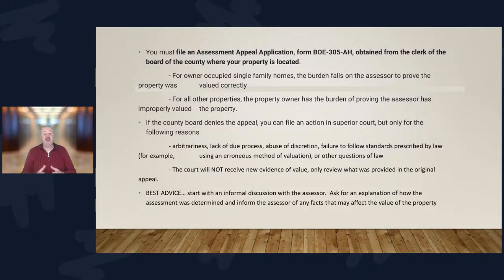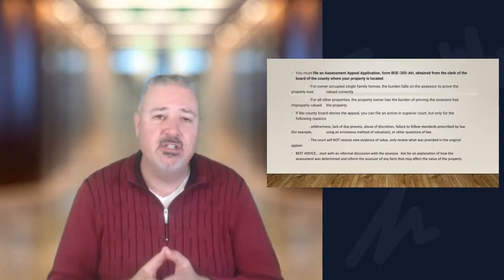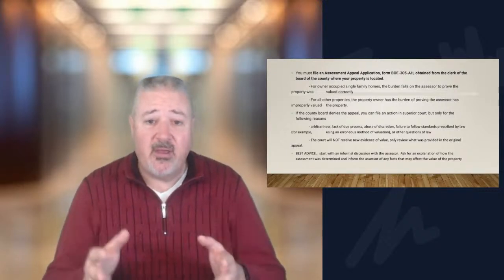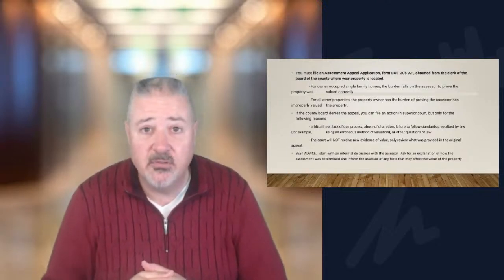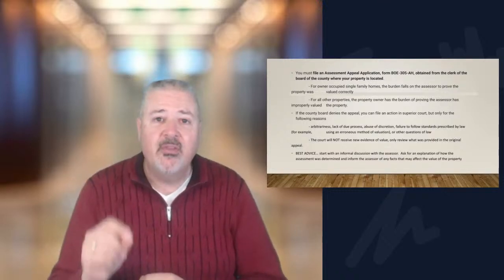You need to file an assessment appeal application — just go to your county assessor's office website and search for 'appeal property taxes.' It's a simple form. For an owner-occupied single-family home, the burden of proof falls on the county to prove their calculation was correct. So if you are appealing the value of the single-family home you own and live in, you don't have to provide any comps — just submit the appeal and the county has to prove their number was right.